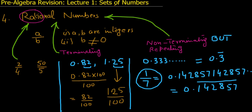No matter how long the decimal is — for example, 0.1256 — as long as it terminates at some point and doesn't go on with dots, it is a rational number. So any terminating decimal number is rational, and any non-terminating but repeating decimal number is also rational. In summary, there are three types of rational numbers: fractions A/B, terminating decimals, and non-terminating repeating decimals.